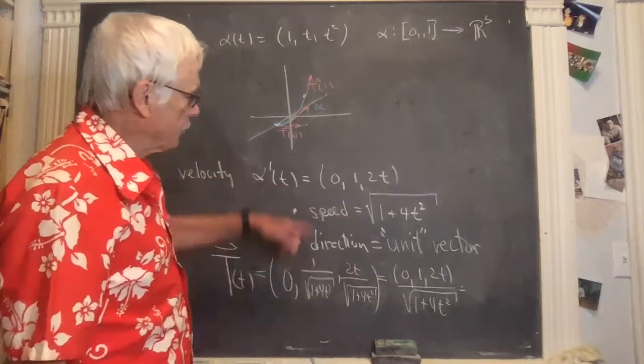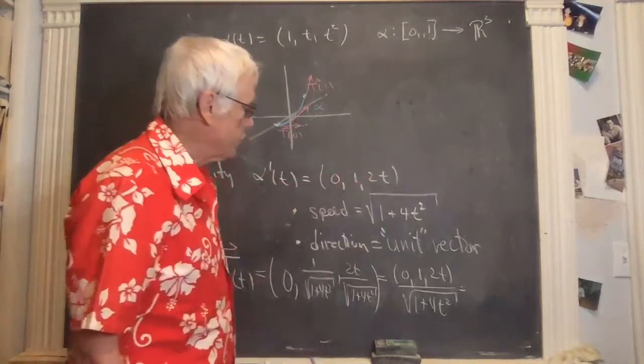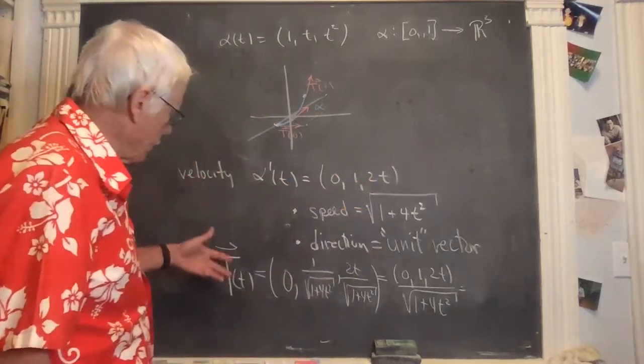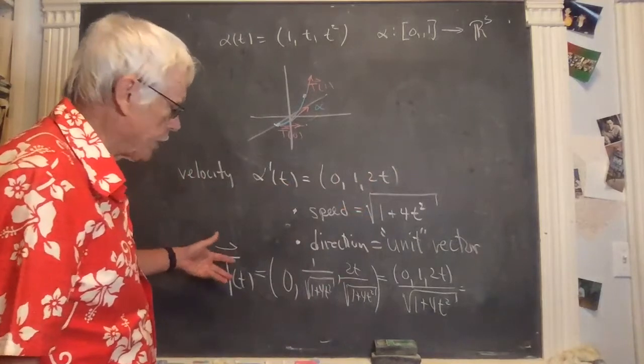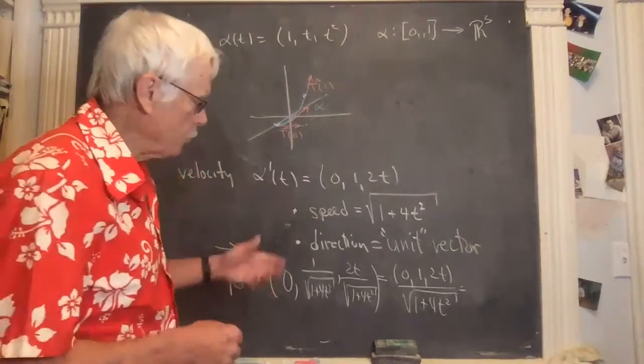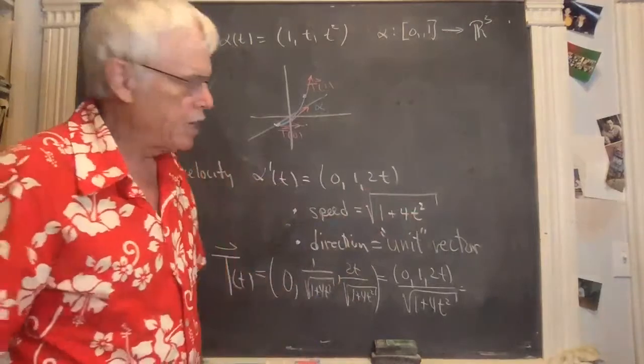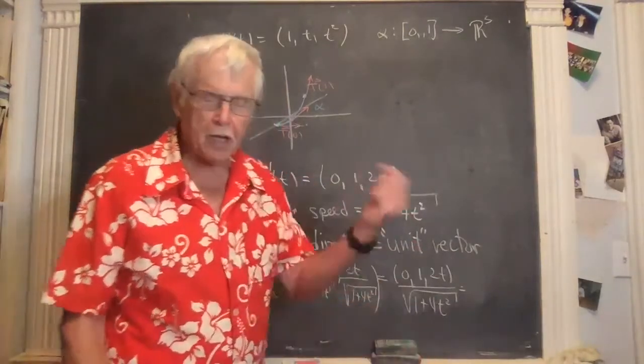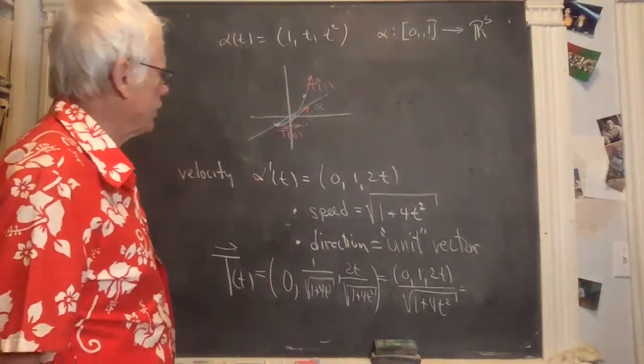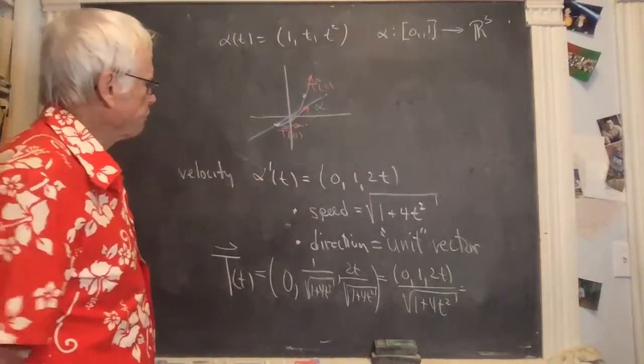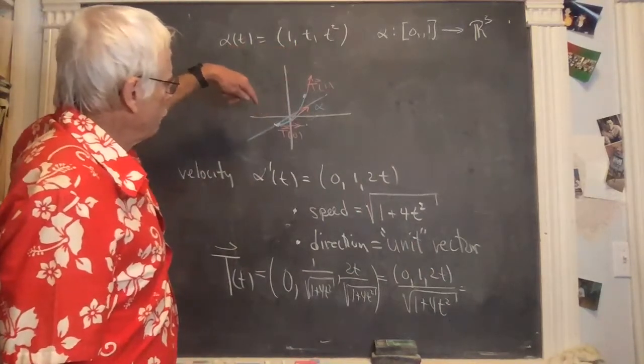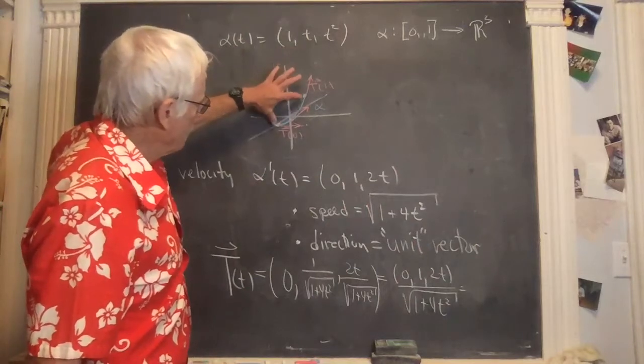Speed is a function of time. It's just, if we're thinking about this as time, this is just this. And then the speed at any given time is given by this formula, and the direction of travel is this unit vector. Now, if I just ask you for a tangent line, which I did in the last homework, you don't have to use this. You can use any vector in that direction. But having a unit vector is important. So technically, the direction will mean unit vector for us, but then we can loosely use it in other ways. So this is our picture.